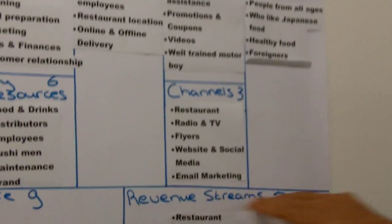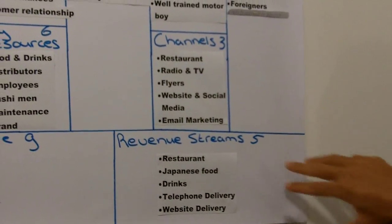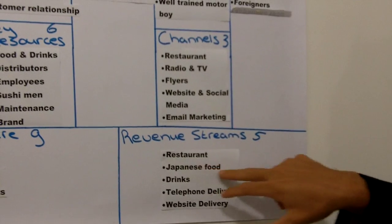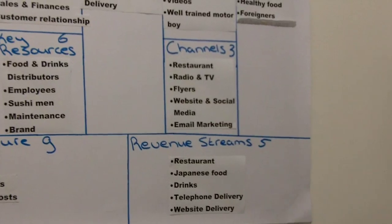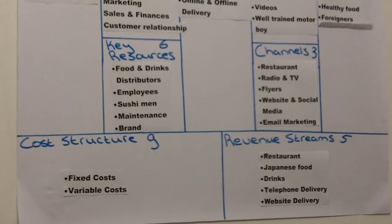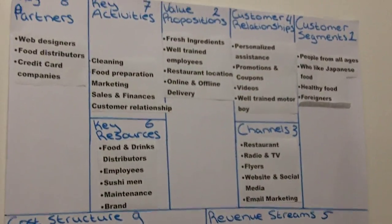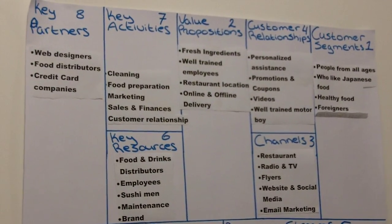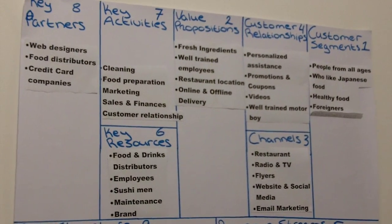Once you have that clear, you move to revenue streams — the fifth building block — where you figure out how you make money. In our restaurant example, we make money through dine-in, selling drinks, telephone delivery, and website delivery. Every possible way you can monetize your business is welcome. Once you have figured this out, you have a clear picture of how you're going to treat your customer, who your customers are, what values you'll provide, and how you'll maintain a relationship with them.